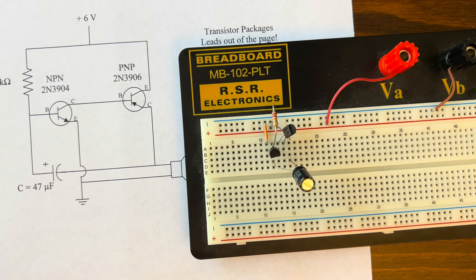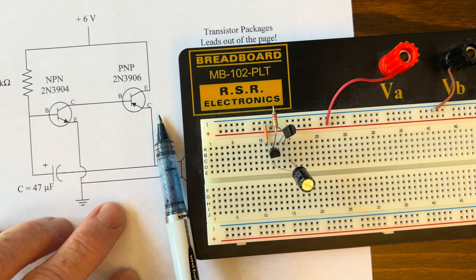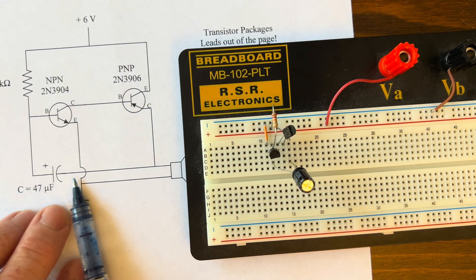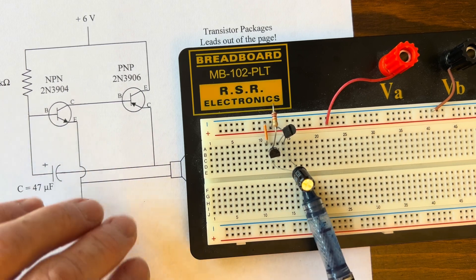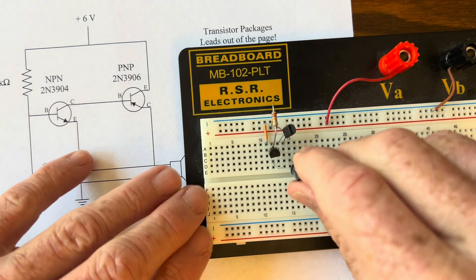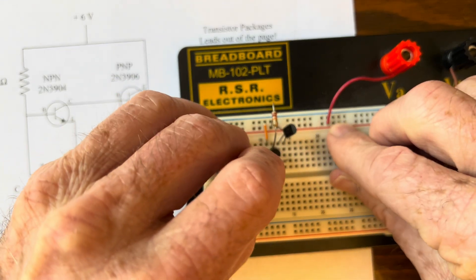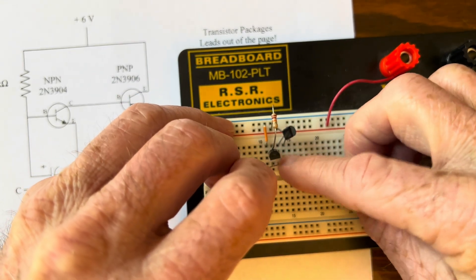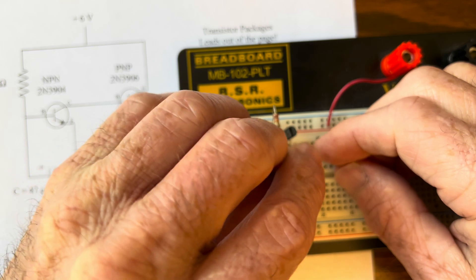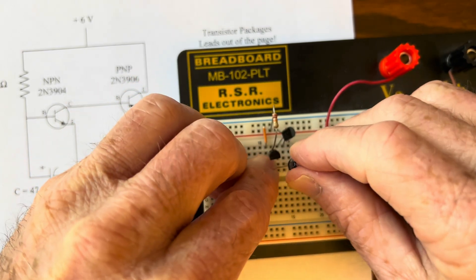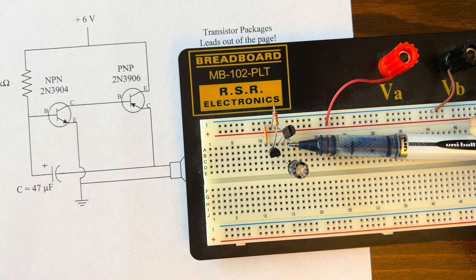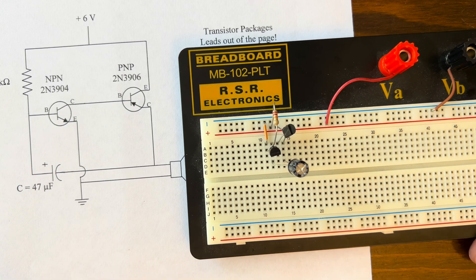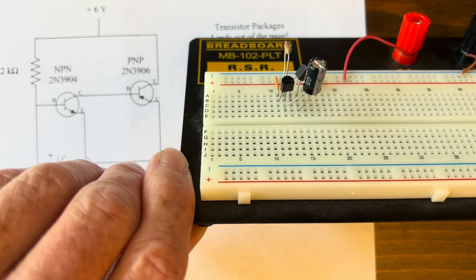So now, remember the collector also gets connected to the negative side of the capacitor. Remember, we put the capacitor here. It's really sitting in the middle of nowhere. I'll just pull that leg out and put it into that same line with my collector of my 2906 or 3906. So it looks something like that. All right. So I've got that done.